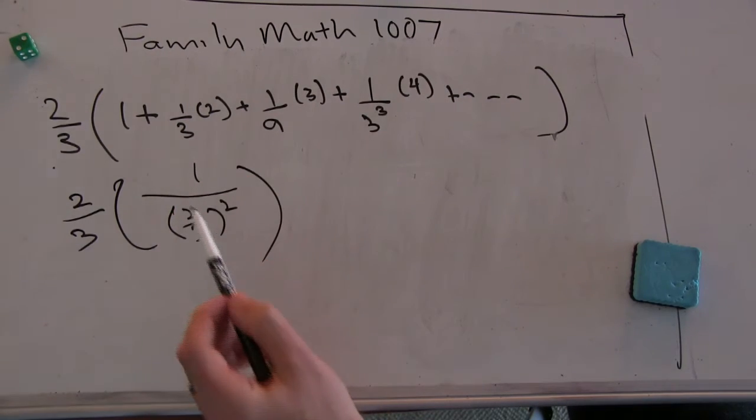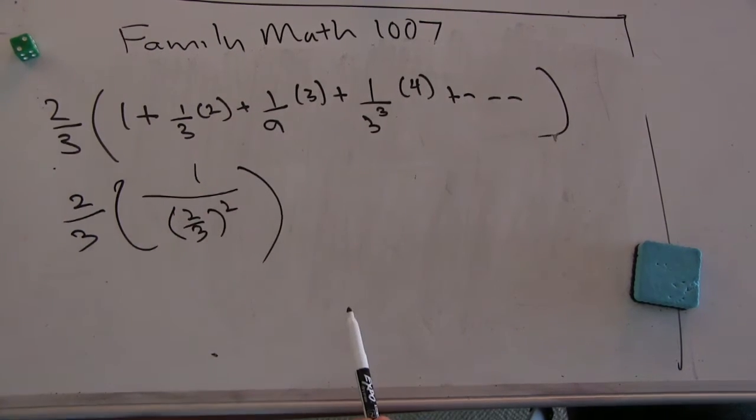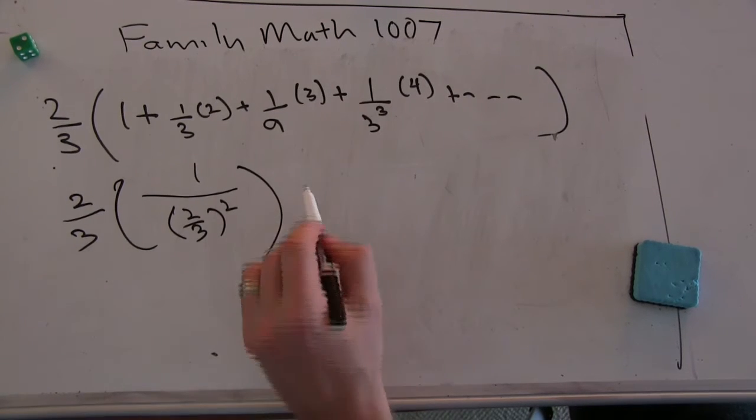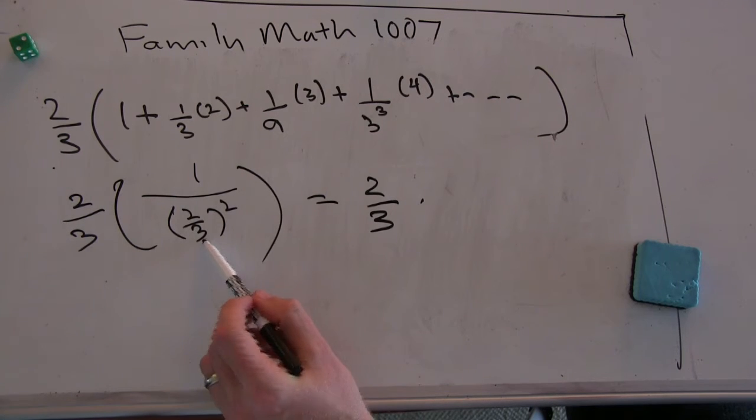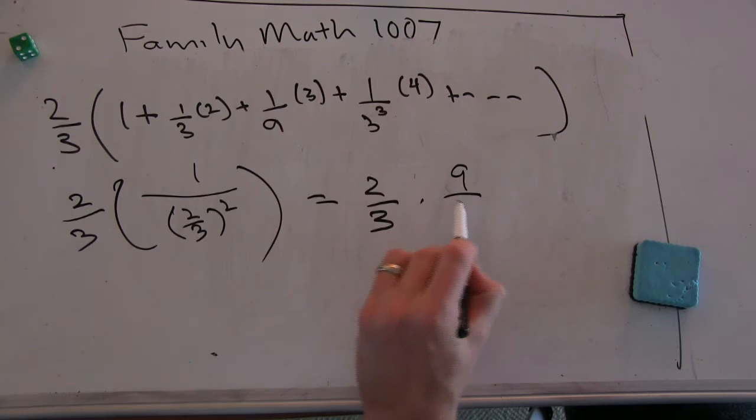So that's two-thirds times one over two-thirds squared. So it becomes one over two-thirds. Two-thirds times, this just flips upside down, two-thirds times nine-fourths.